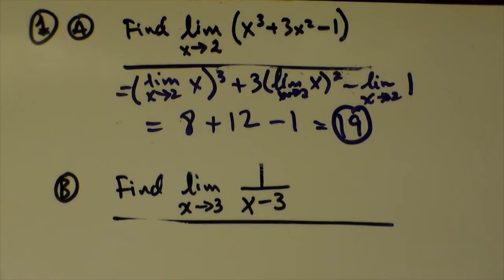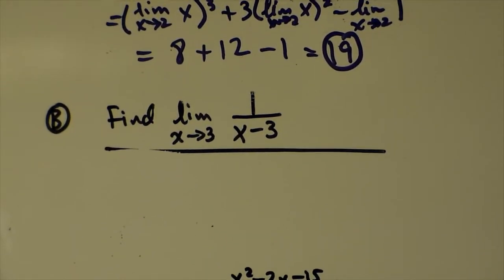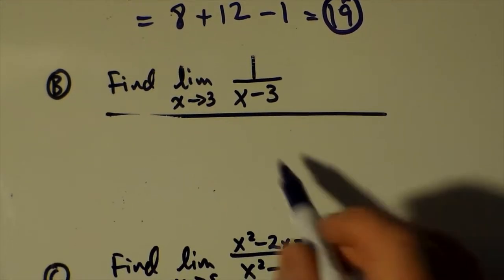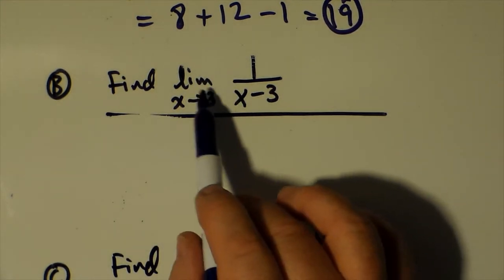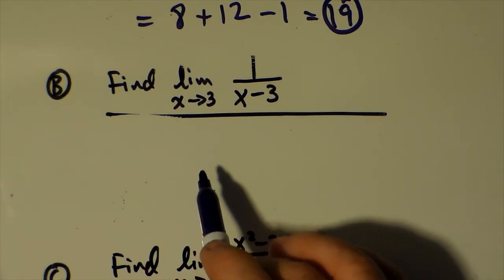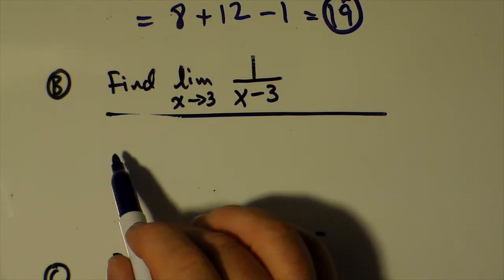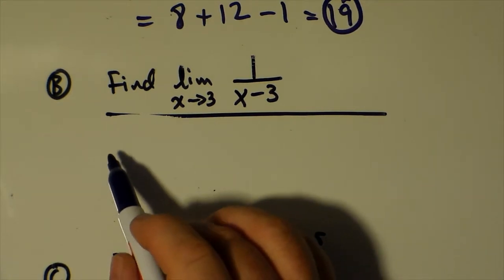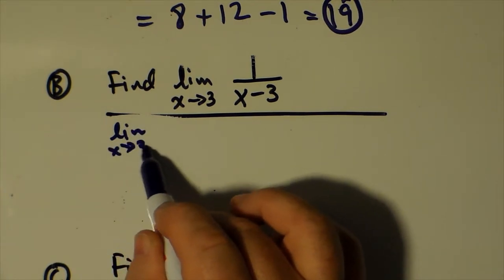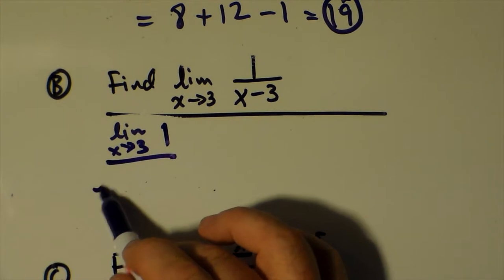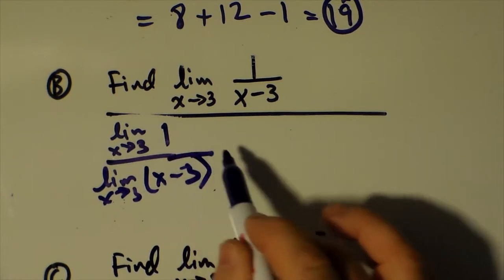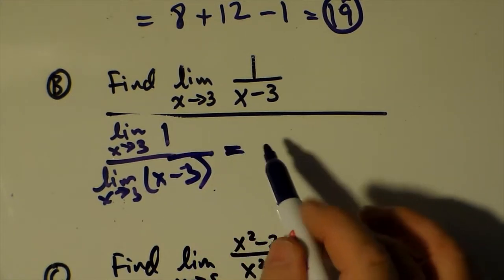Let's go to the next example — that's where we have a fraction to reckon with. The limit of a quotient is the quotient of the limits, provided the limits exist. So we have the limit as x approaches 3 of 1, divided by the limit as x approaches 3 of x minus 3.